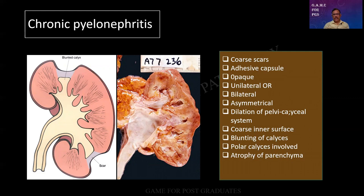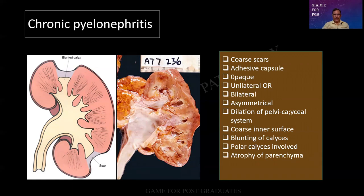Pyelonephritis can be unilateral or bilateral. Unilateral: for example, if there is a renal stone in the ureter on one side, or a tumor impinging on one ureter. Bilateral: when the obstruction is lower down — chronic prostatic hyperplasia, posterior urethral valve, etc. Whatever the cause, it is asymmetrical. There is dilatation of the pelvic calyceal system, a coarse inner surface, blunting of the calyces, polar calyces are involved, and there is atrophy of the parenchyma at the corresponding regions. Be very assertive when you give a diagnosis. In this specimen there is rounding of the calyces and distension of the pelvis, and accordingly there can be atrophy of the parenchyma adjoining the calyces.